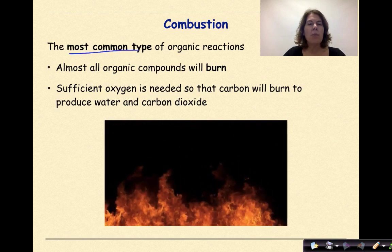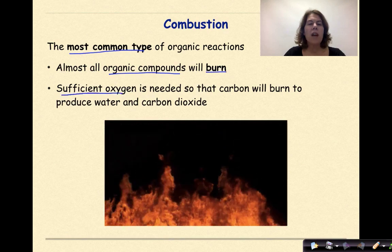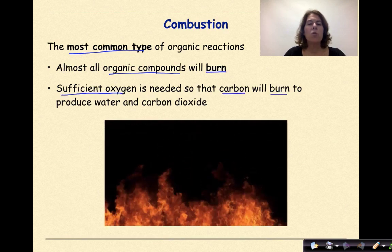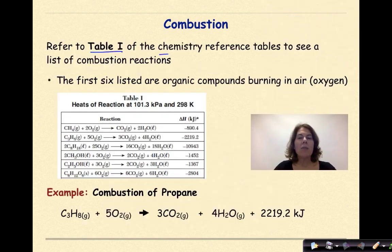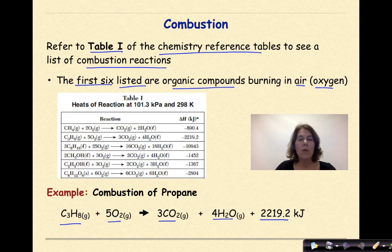Combustion is the most common type of organic reaction. Almost all organic compounds will burn, and we need sufficient oxygen so the carbon will burn to produce water and carbon dioxide. Refer to Table I of our chemistry reference tables to see a list of combustion reactions — the first six listed are organic compounds burning in oxygen. Here's an example of the combustion of propane: propane plus oxygen gives us carbon dioxide and water, releasing 2,219.2 kilojoules of energy.